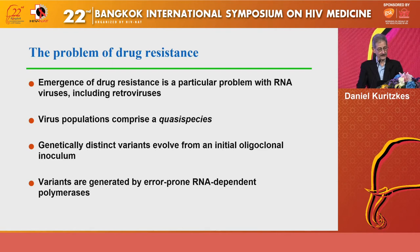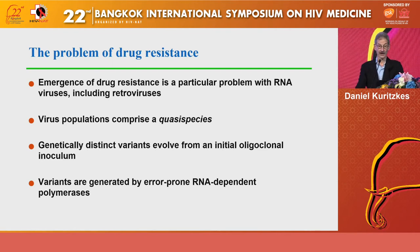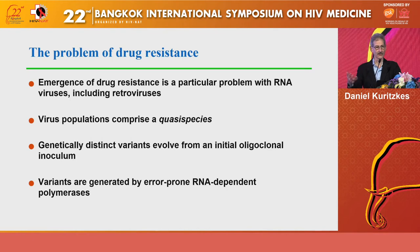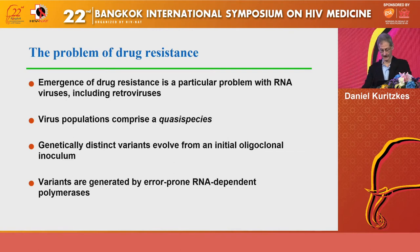The genetically distinct variants within this quasi-species evolve from the initial oligo-clonal inoculum — the one or two viruses that succeed in establishing infection following transmission. These variants are generated by the error-prone RNA-dependent polymerase. RNA polymerases lack a proofreading function, so when the wrong base is incorporated during viral replication, there's no mechanism for excising it, and it remains in the viral genome as a mutation.